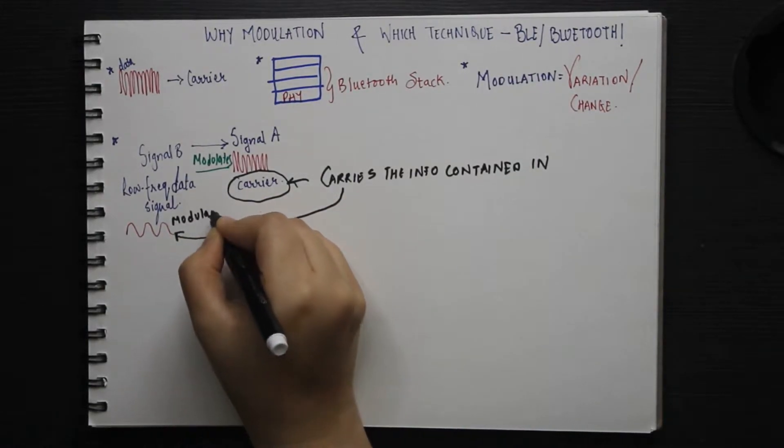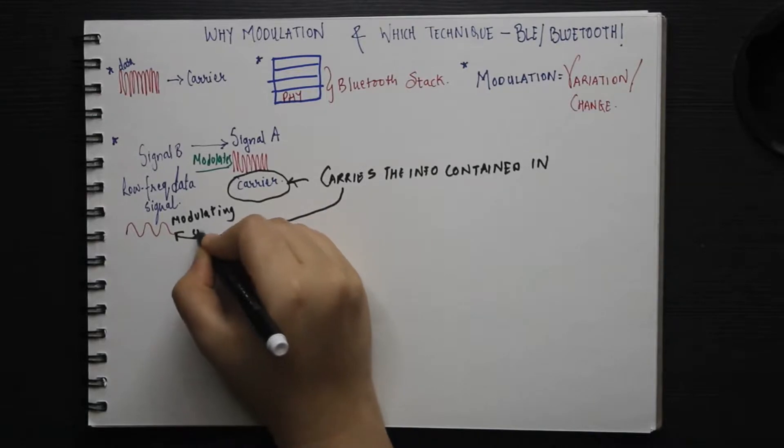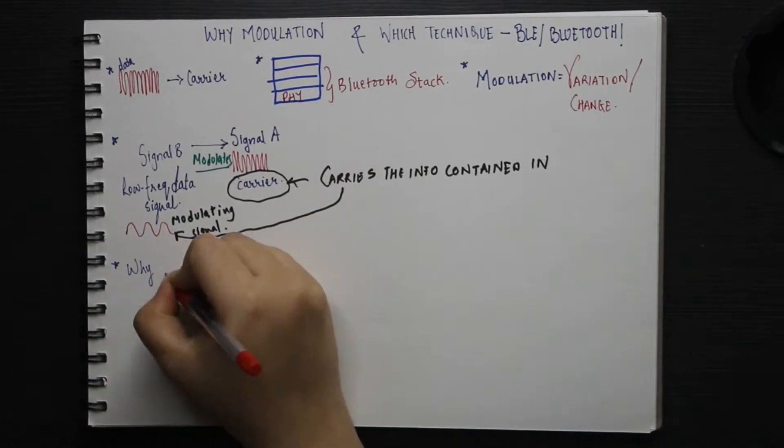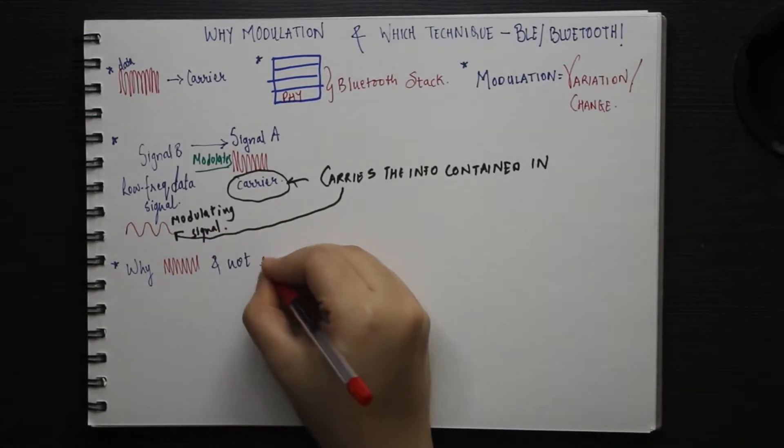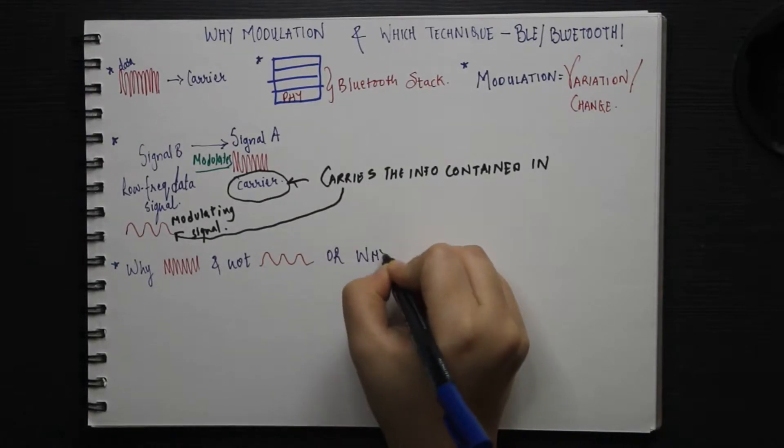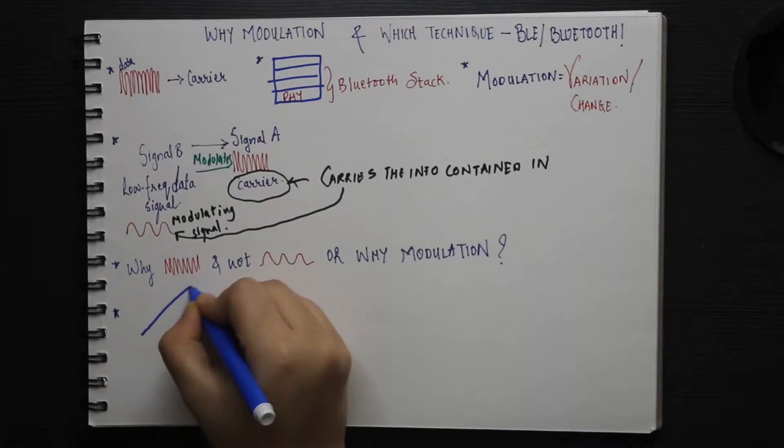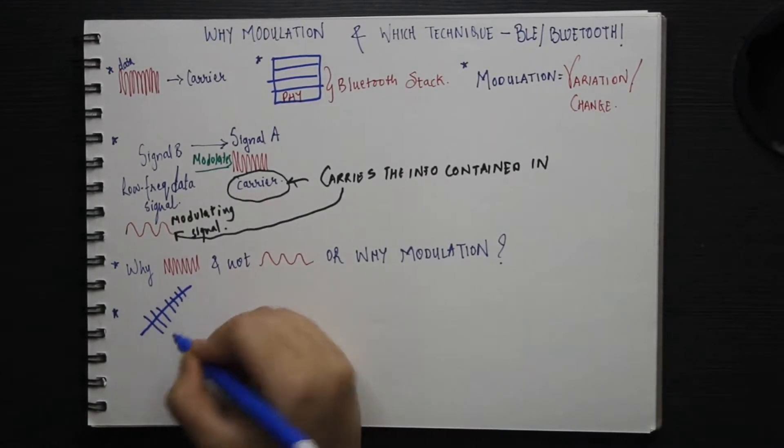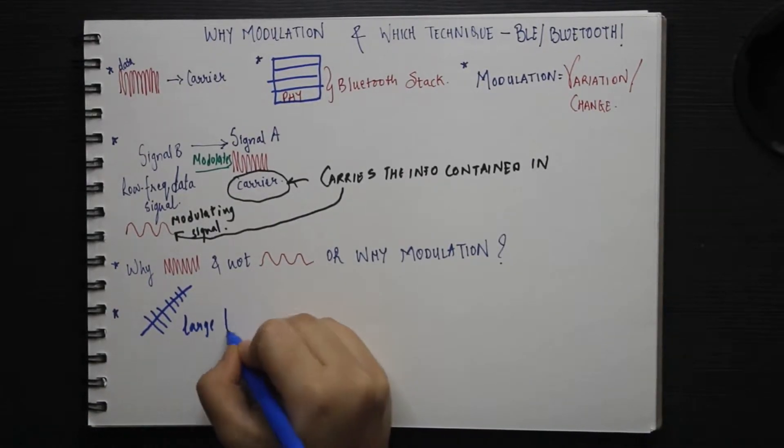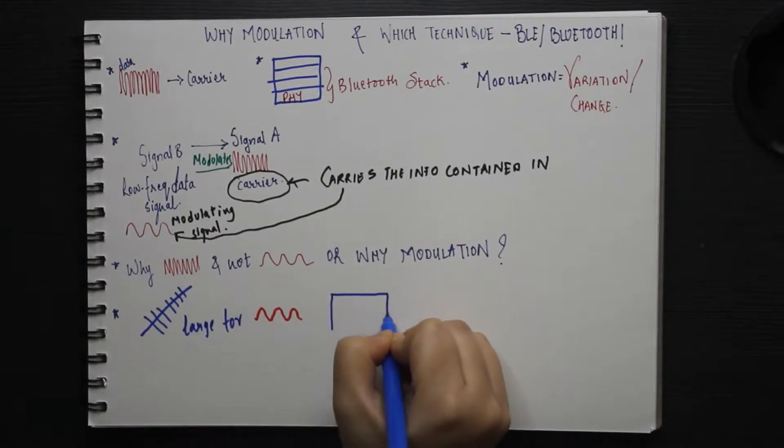Why do we use high frequency carrier signal? Or, why don't we transfer the information directly using the low frequency data signal? There are various reasons for this. The first one being length of the antenna. It'll be smaller for high frequencies and bigger for lower frequencies.